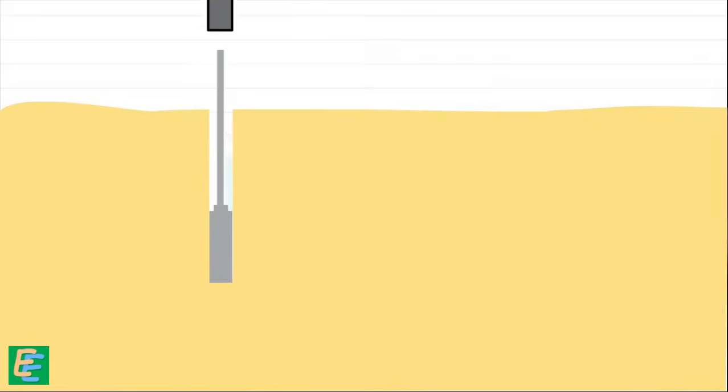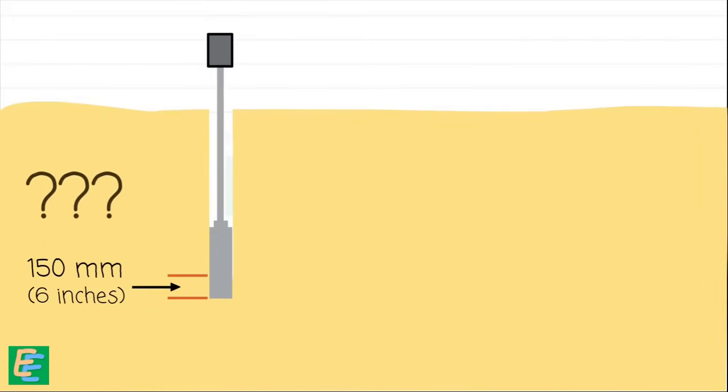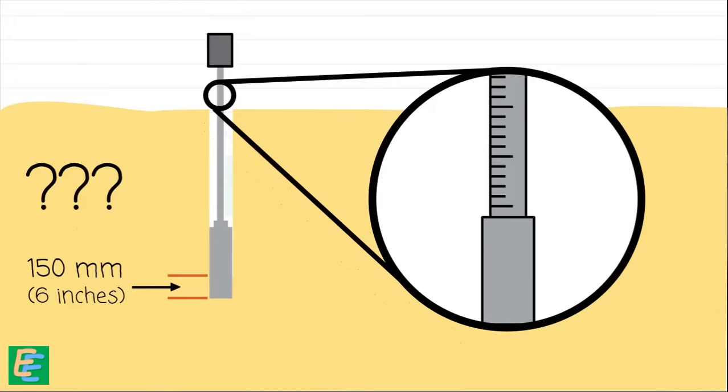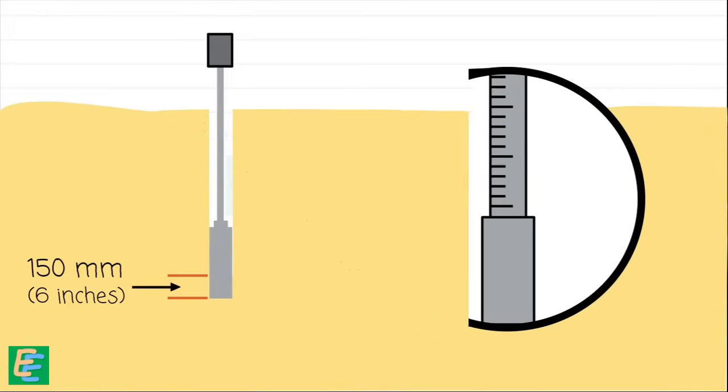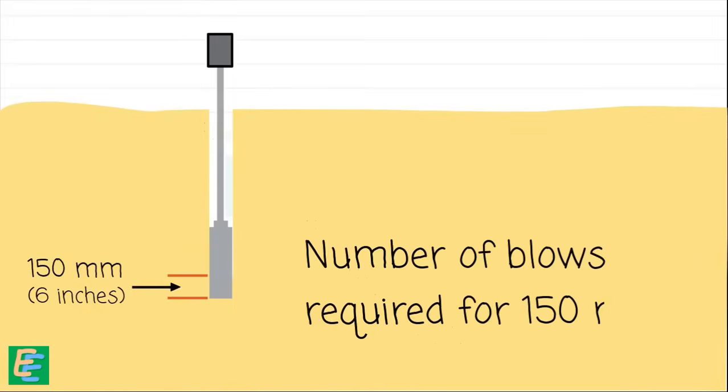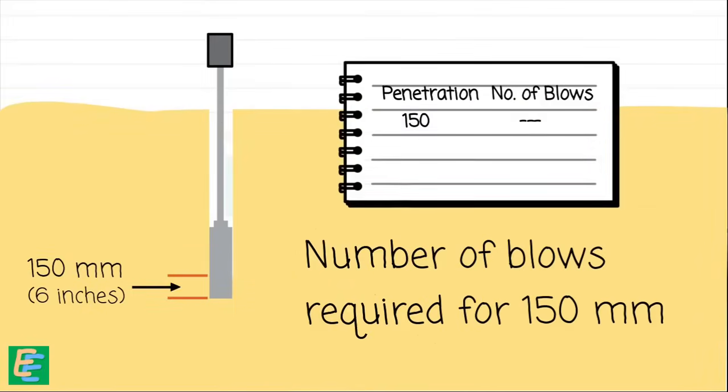We continue hammering the sampler until it penetrates the soil to a depth of 150 mm. How do we know when the sampler has reached 150 mm? Well, there is a scale marked on the drill rod at the top that helps us measure the depth. The number of blows required to drive this 150 mm is counted and recorded.